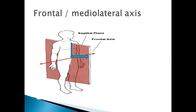You already know that the sagittal plane divides the body into two equal halves — right side and left side. Now we will talk about axis. In the sagittal plane, there is the frontal axis.